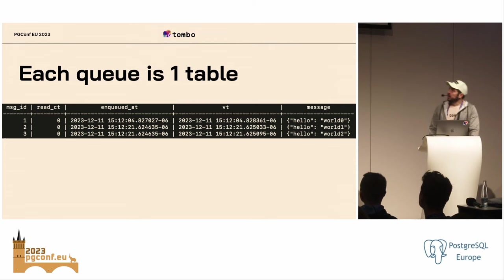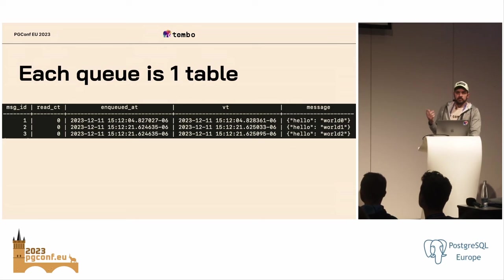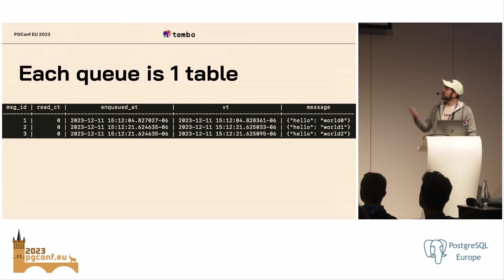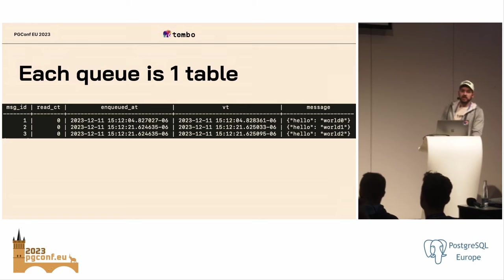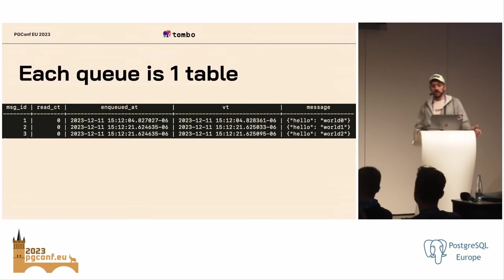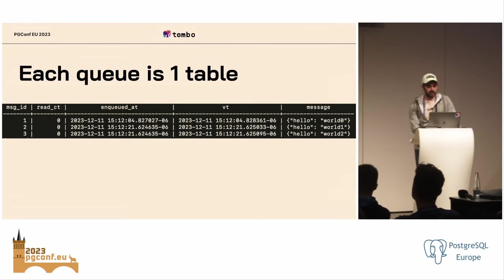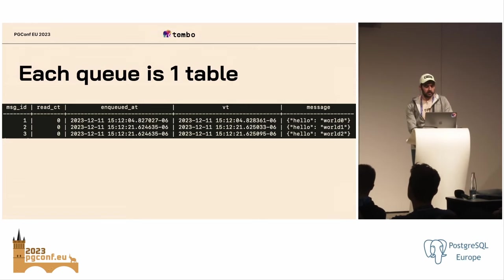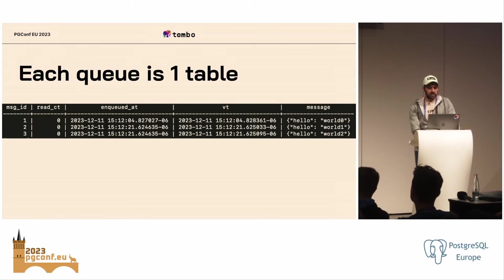Each queue is basically one table aside from the archive table. To send a message, it's just an insert. You set the visibility timeout on insert and the message — the visibility timeout is usually 'now' so that it's immediately available, but you could set it to some point in the future. So whatever write throughput and latency you'd expect out of Postgres is what you'd get out of PGMQ.